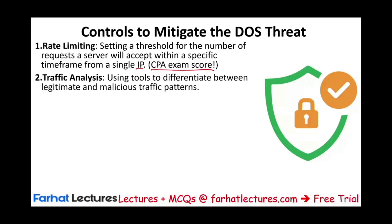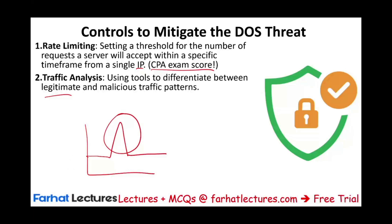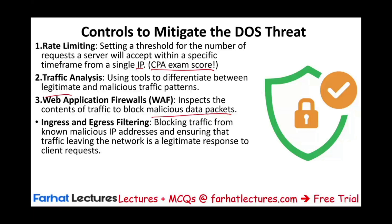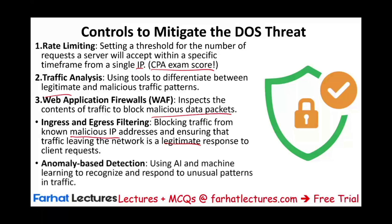Traffic analysis uses tools to differentiate between legitimate and malicious traffic patterns — if you see a sudden large spike in traffic, that's unusual and warrants investigation. Web application firewalls inspect the content of traffic to block malicious data packets before accepting them. Ingress and egress filtering blocks traffic from known malicious IP addresses — cybersecurity teams maintain lists of these IPs so requests from them are automatically denied, while also ensuring traffic leaving the network is legitimate. Finally, anomaly-based detection uses AI and machine learning to recognize and respond to unusual traffic patterns.